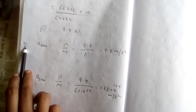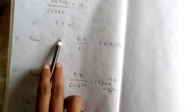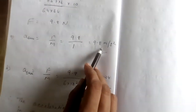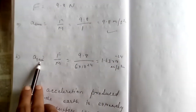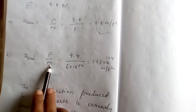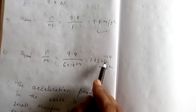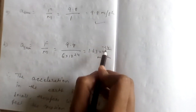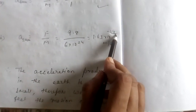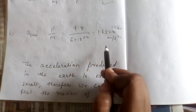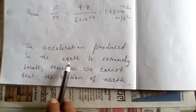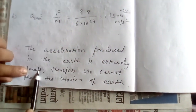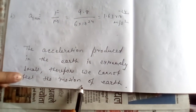Now let us calculate the accelerations. Acceleration produced in the stone: using a = F/M, F = 9.8 N and mass of stone = 1 kg, so acceleration = 9.8 m/s². Similarly, acceleration produced in the earth: a = 9.8 / (6 × 10²⁴) = 1.63 × 10⁻²⁴ m/s². You can see this is an extremely small value — 10⁻²⁴. Think how small that is. Therefore, we cannot feel the motion of the earth.